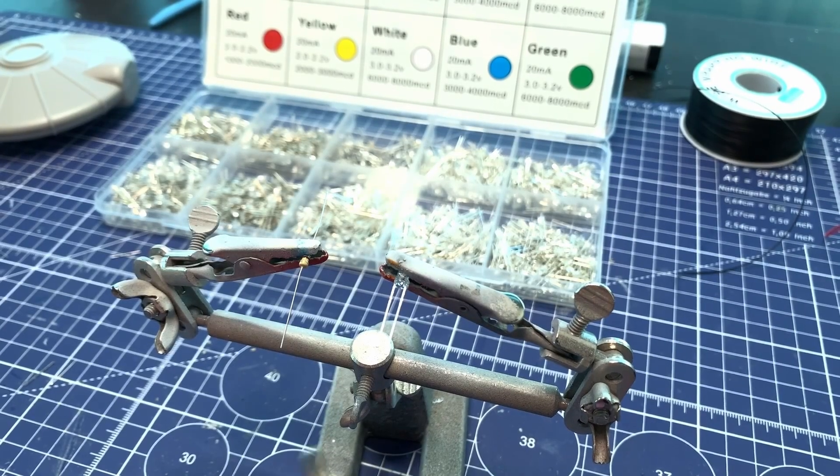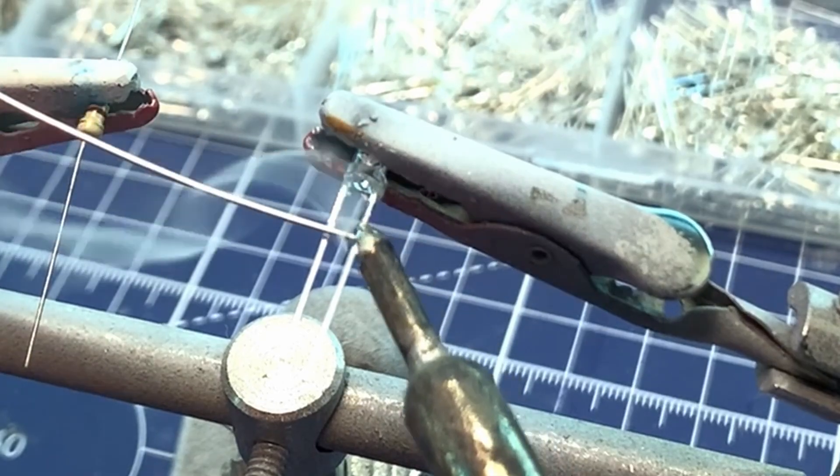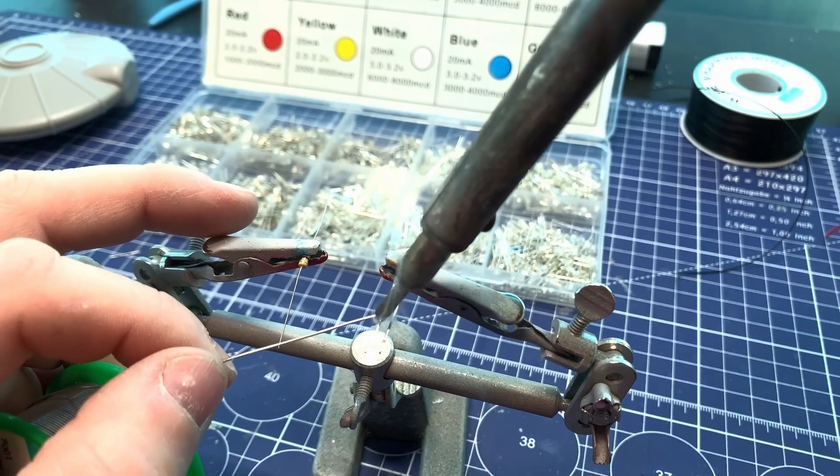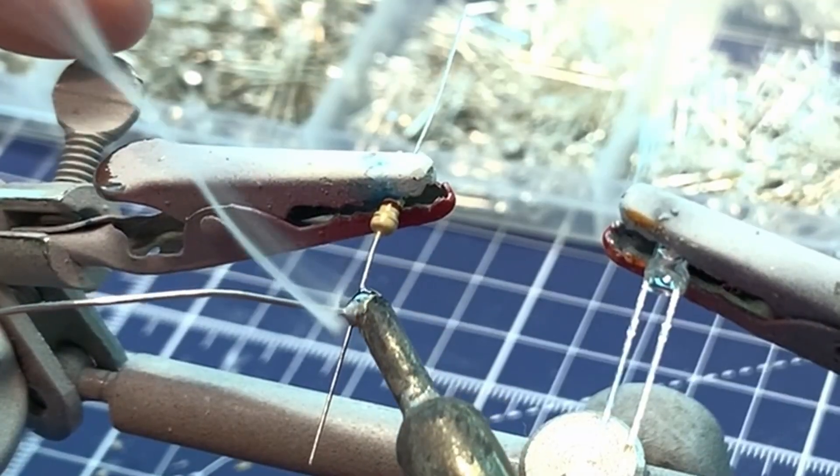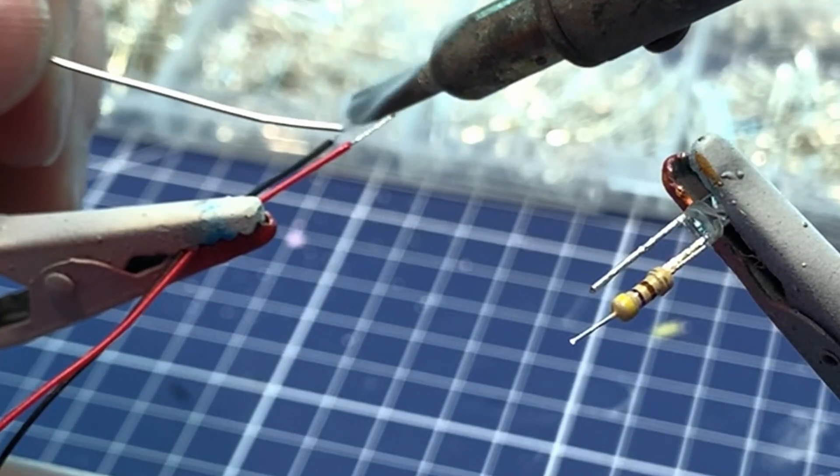The first thing I want to do is pre-tin the soldering iron, and that is putting solder on the tip, and it improves heat transfer. But I'll also be pre-tinning the leads of the LEDs, the resistors, and the wires for the same reason, to improve solderability.